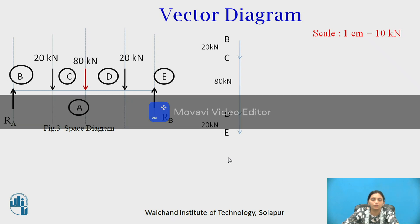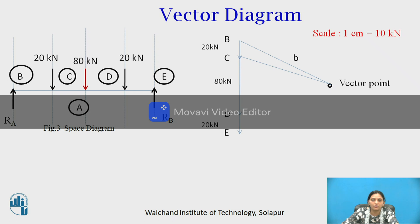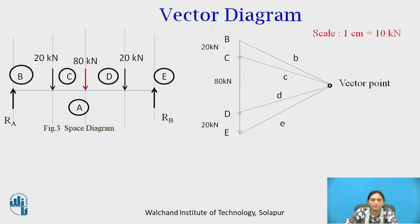To draw the funicular diagram, we need to take one vector point. Join point B with the vector point — the name of this line is Line B. Join C with the vector point — the name of this line is Line C. Similarly, join D and E with the vector point to get Line D and Line E. This completes the vector diagram. RA and RB are unknown and not yet shown in the figure.